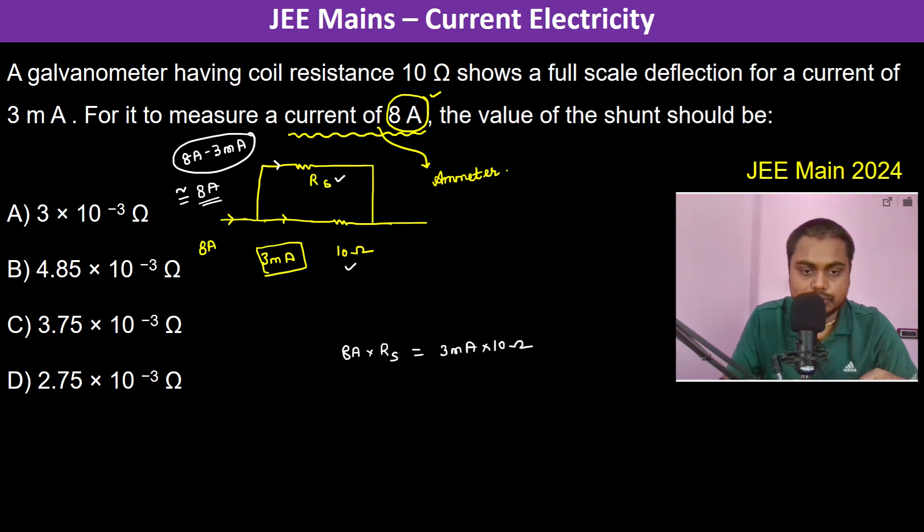So therefore the shunt resistance becomes 3 into 10 to the power minus 3 into 10 divided by 8 ohms. So this is 30 divided by 8 milliohms, which is 3.75 into 10 to the power minus 3 ohms. So therefore the answer becomes C.